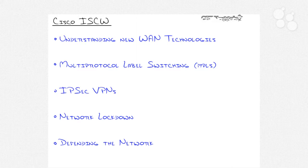I wanted to emphasize this because this is the breakdown of the major topics in the ISCW video series. First, notice that we have one section that implements the word WAN: understanding new WAN technologies. That's where we'll talk about things like DSL and cable technologies that have been out for quite some time but haven't even been mentioned in the CCNP track until now. We'll then talk about MPLS, the next-generation WAN technology — or rather, it's not even a WAN technology. MPLS is label switching, implemented on top of existing WAN technologies.